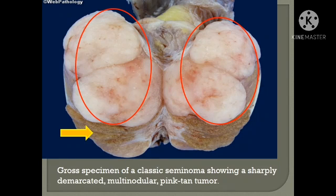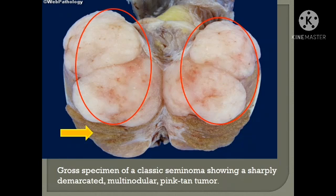The tumor is very homogeneous and nodular. You can appreciate one nodule above and another nodule below, showing multi-nodularity. The features are: homogeneous, nodular, bulging cut surface, and a pink-tan tumor which is very sharply demarcated from the surrounding area. This is the classical gross description for seminoma.